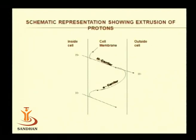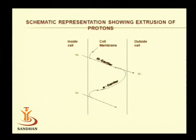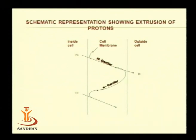We now have to understand how the electron transport chain helps in generation of energy. The orientation of the membrane is such that carriers remain in sequence, and the sequence is that hydrogen carriers and electron carriers are alternatively present.